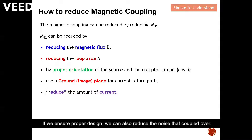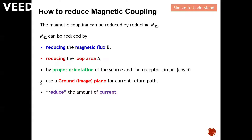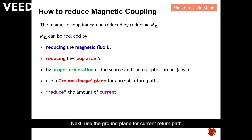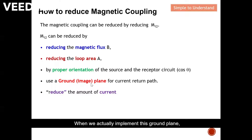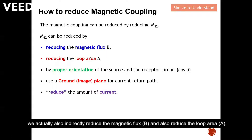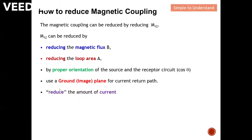By proper orientation of the source and the receiver circuit — essentially by managing the cosine theta term — if we ensure properly designed orientation we can also reduce the noise that couples over. Next: use a ground plane for the current return path. I'm going to explain with a diagram how we can implement this ground plane, which indirectly reduces the magnetic flux and also the loop area.